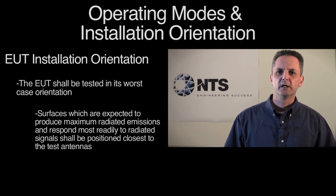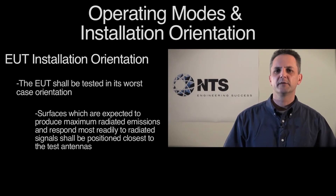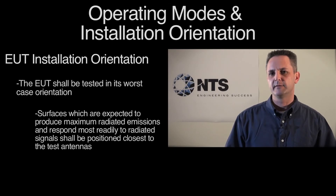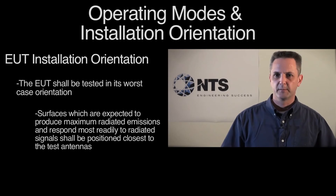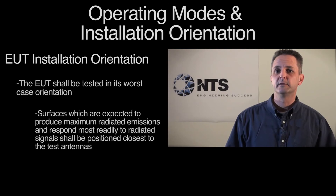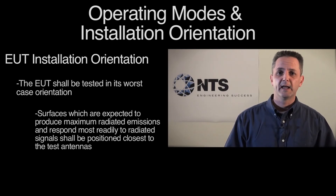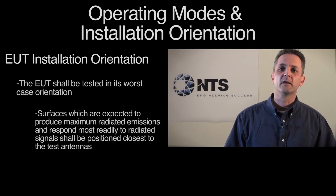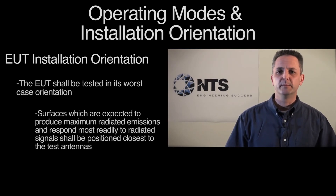In general terms, you look at the equipment to determine where it's most likely to have an emissions or susceptibility issue. Checking for large cable connectors, large interface plates, large LCD screens and displays, gasket areas, latches, doors, and covers are likely to be good candidates for that type of issue.